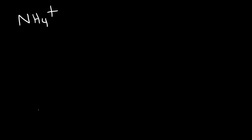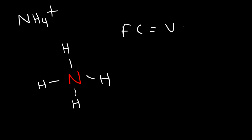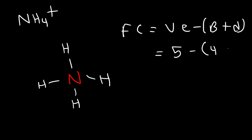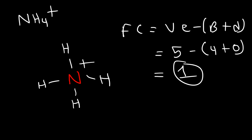Now what about NH4+? Here we have a nitrogen attached to four hydrogen atoms. Nitrogen has five valence electrons, and this structure has four bonds and no dots. So five minus four is one — the positive charge is on the nitrogen.